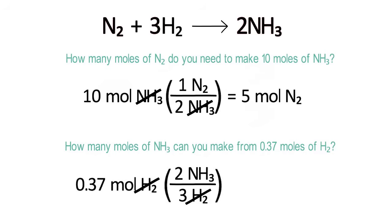Finally, do the multiplication in your calculator. If your calculator can't do fractions or doesn't have parentheses, simply multiply 0.37 times 2, and divide that number by 3. The answer rounds to 0.25 moles of ammonia.